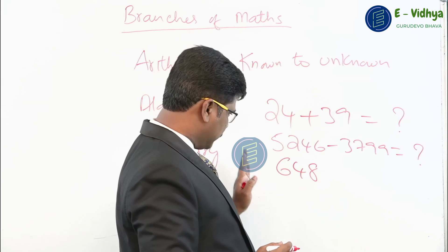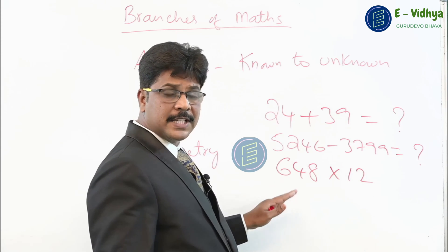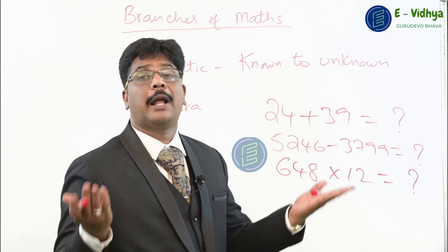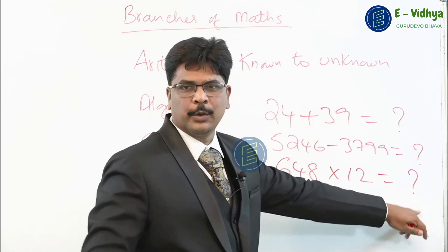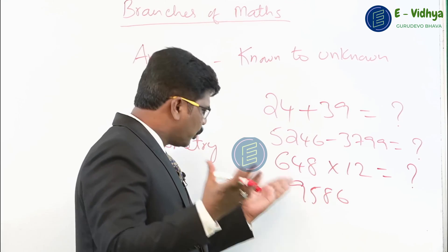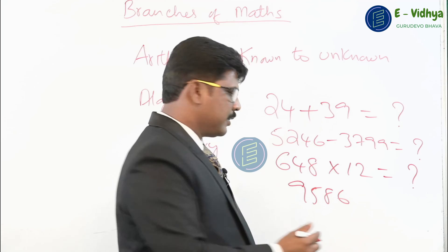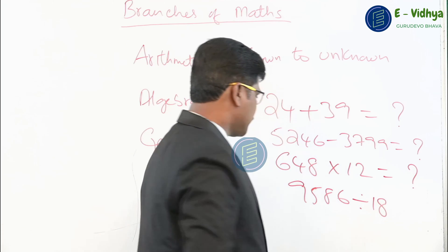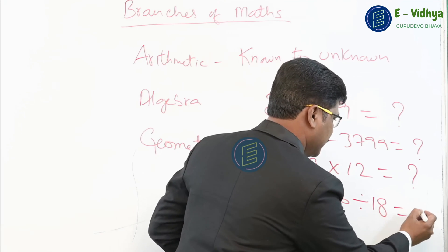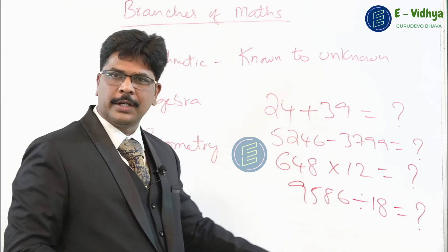Or say there are 648 rupees and 12 people contributed this amount. If 12 people contributed 648 rupees each, what is the total amount? I don't know that — I have to calculate it. Or there are 9,586 rupees and 18 people want to share that money equally. How much will each person get? I don't know, so I need to calculate it. All of this is arithmetic — known to unknown.